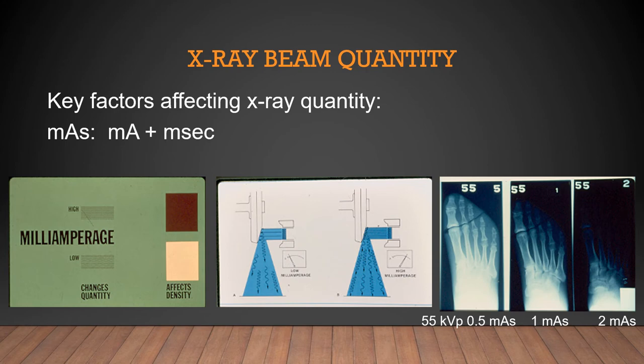Let's look at MA and time. MA is your milliamps, time is your milliseconds, and together it's called milliamps per second. Quantity is directly proportional to the MAS. If I'm taking an X-ray at 0.5 MAS, then 1 MAS, then 2 MAS, every time I increase my MAS I increase the quantity of X-rays in the beam — like throwing half a tennis ball, then one, then two at the patient.